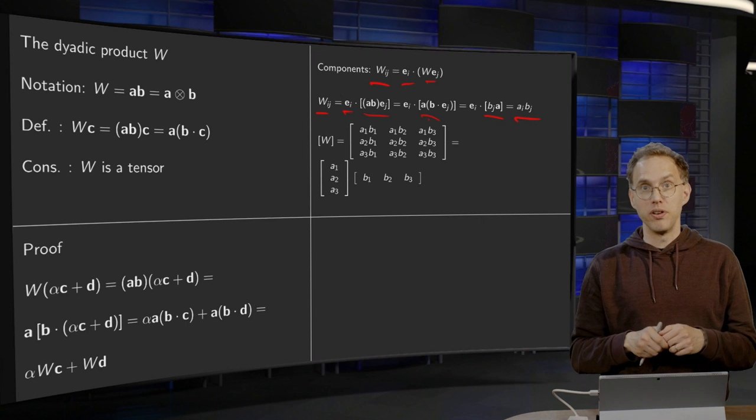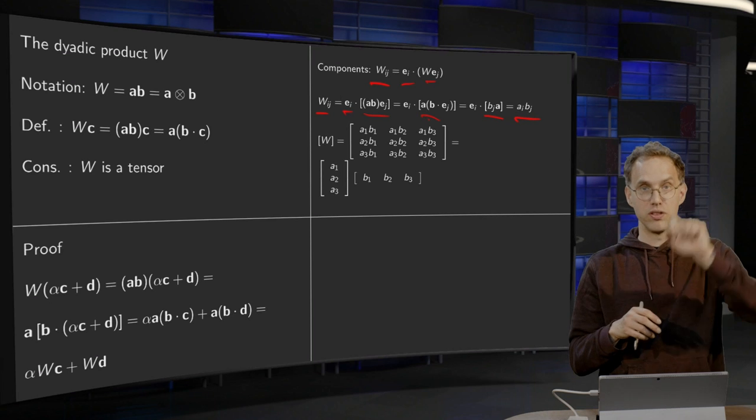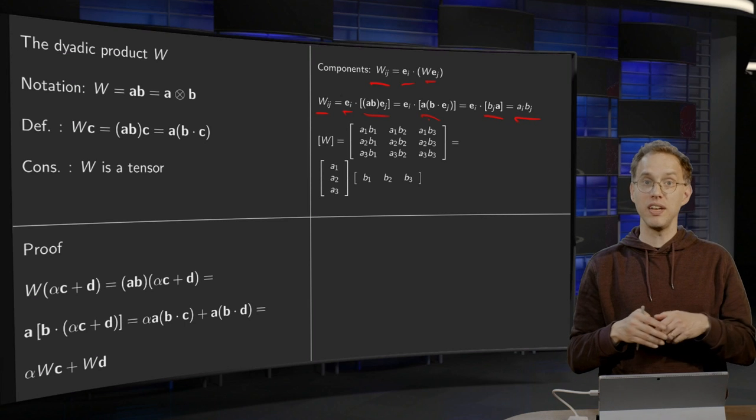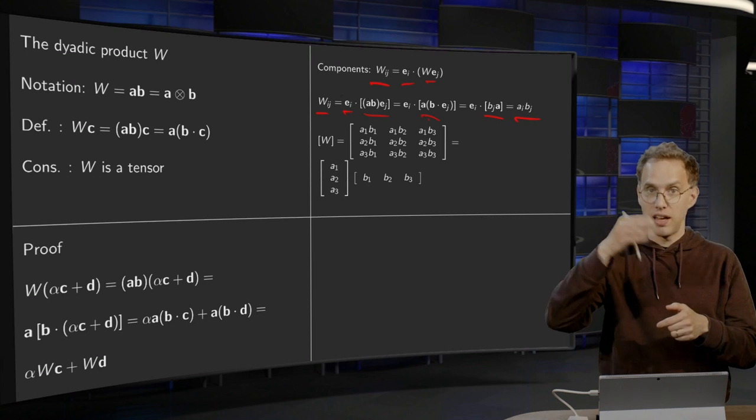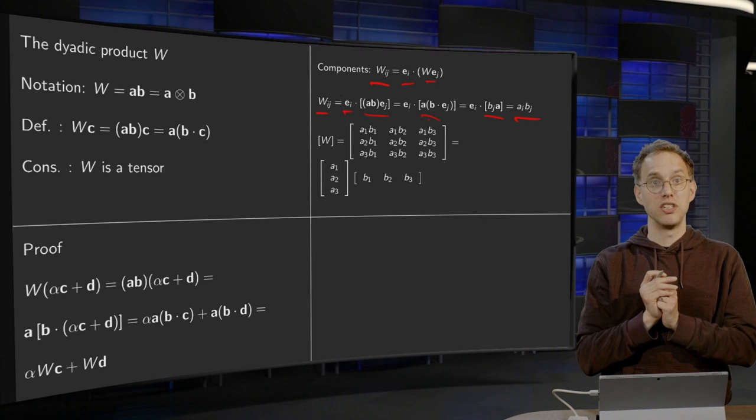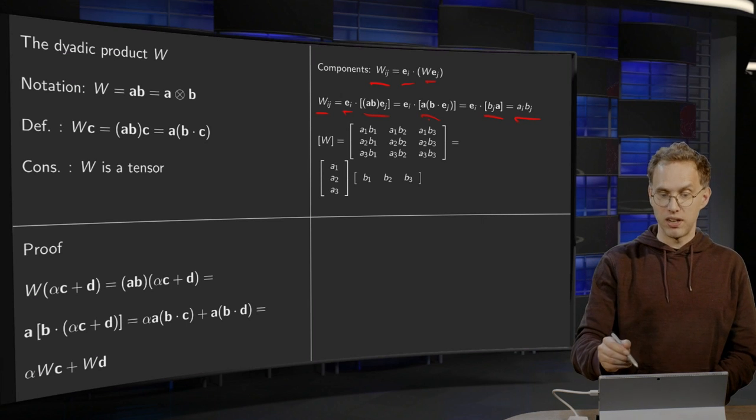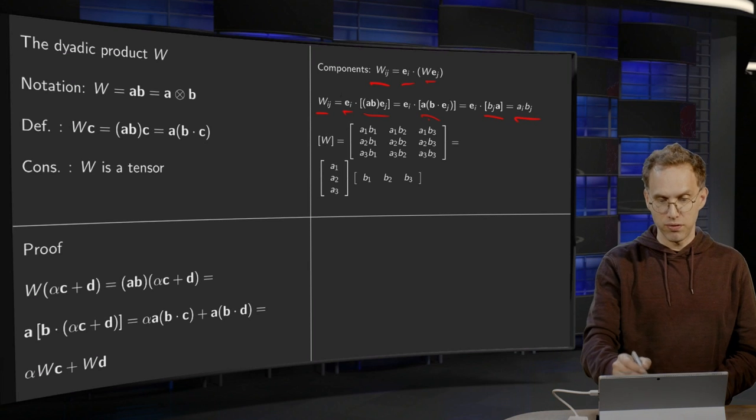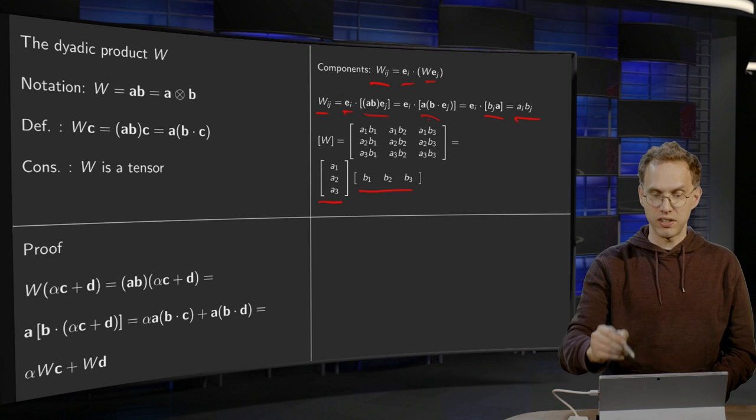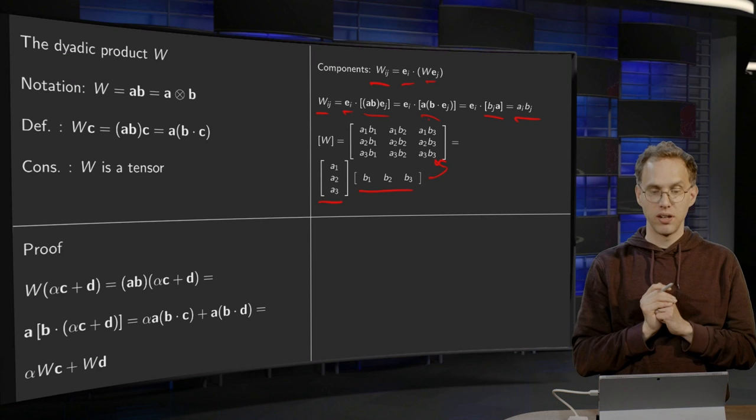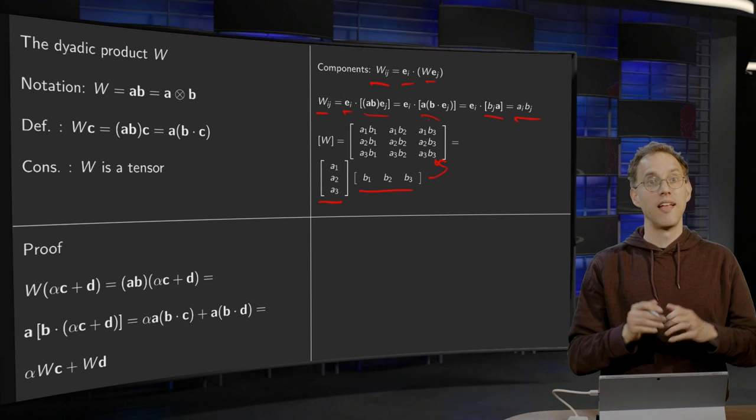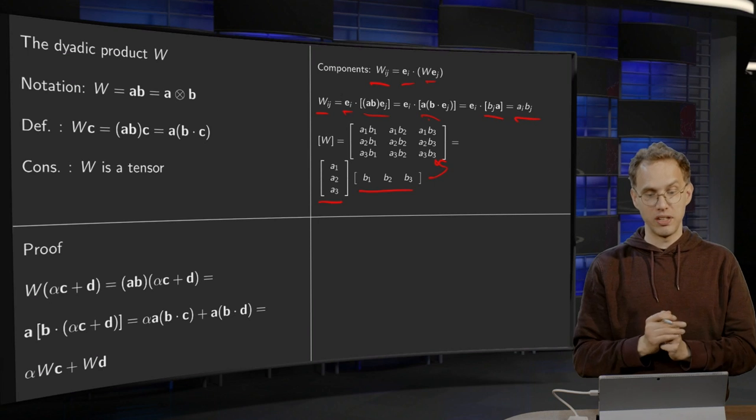So, for example, the first row, then your first row, your I is 1 and your J runs from 1 to 3. So, you get an A1B1 and an A1B2 and an A1B3. So, that's the matrix representation of your tensor W. And you'll see you can write this as vector times vector as follows. If you take your A first as a column vector times B as a row vector, you get exactly this matrix over here. So, that is how you can rewrite your dyadic product as vector times vector. This is how you get the matrix representation.